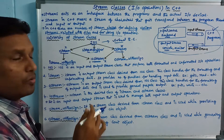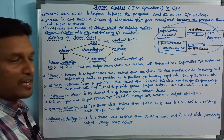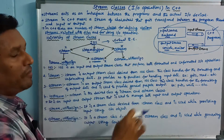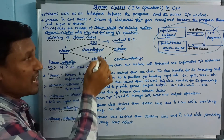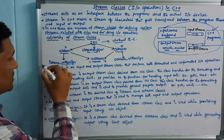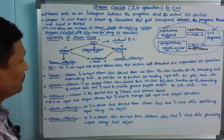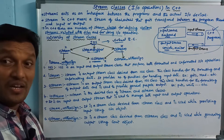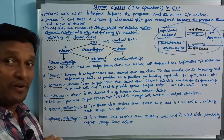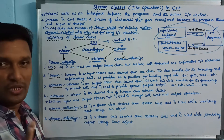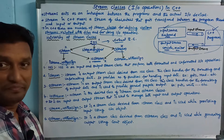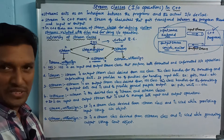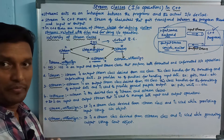The first class is IOS — IOS stands for input and output. It performs both formatted and unformatted input/output operations. Unformatted is only character-based, while formatted means any data type.